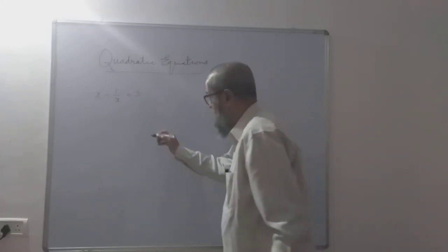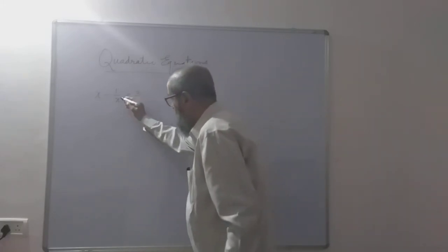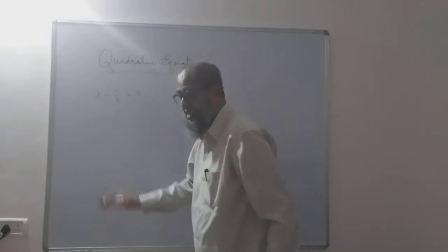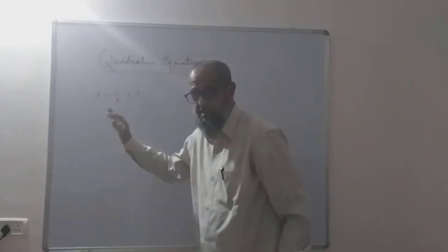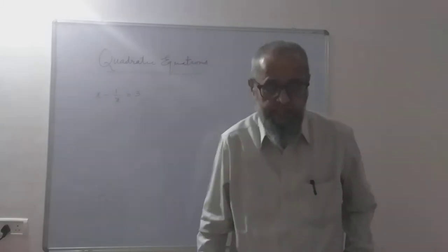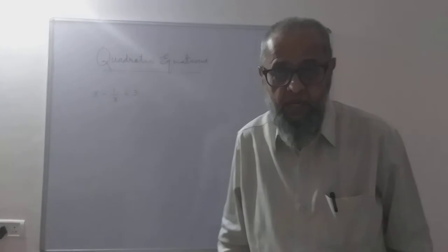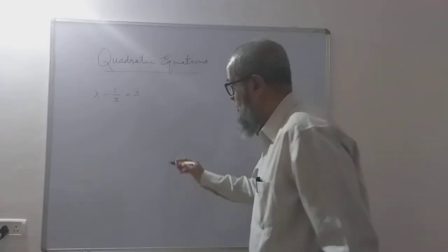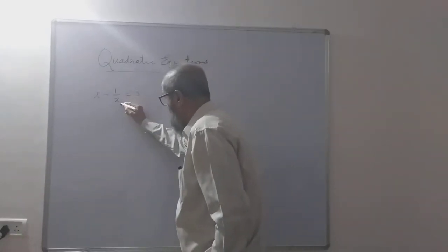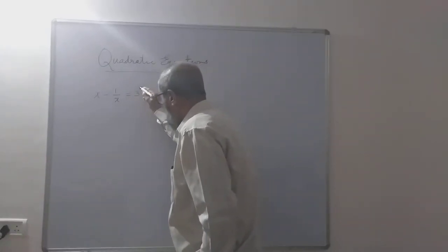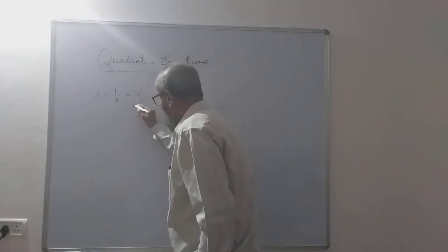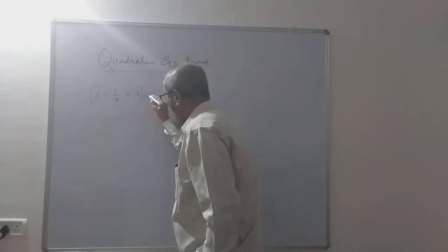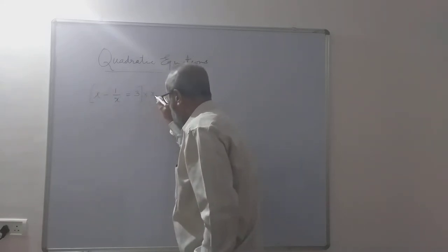Now this x must be removed - the equation is not in the standard form. We have to first bring it to standard form. To remove that denominator, the entire equation should be multiplied by x.